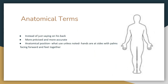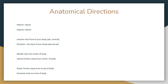Next we go on to anatomical terms, which are very important. In the healthcare setting they use these because instead of just saying 'his back,' they are more precise, uniform, and accurate — you can identify exactly where something is. Anatomical position is the standard reference: hands on the side, palms facing forward, feet together. These terms are a bunch you have to memorize. Inferior means below. Superior means above. Anterior means the front of your body, also called ventral. Posterior means the back, also called dorsal. Medial is near the center of the body. Lateral means further away from the center. Distal is further away from the trunk. Proximal is close to the trunk.